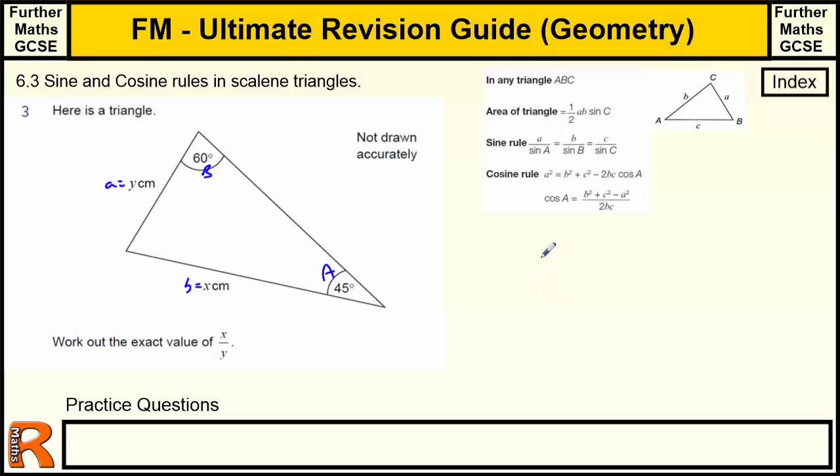So a is y divided by sine a, which is 45, equals b, which is x, divided by sine b, which is 60. And we want x divided by y, so we need to divide by y and then times by the sine 60. So we end up with sine 60 over sine 45 equals x divided by y. So I've divided the y onto this side, because it's times y on the top. In fact, with fractions like this, you can just exchange the diagonals, and that won't affect your equation. So this is my exact value, but this is not the value. This is sine 60 and sine 45.